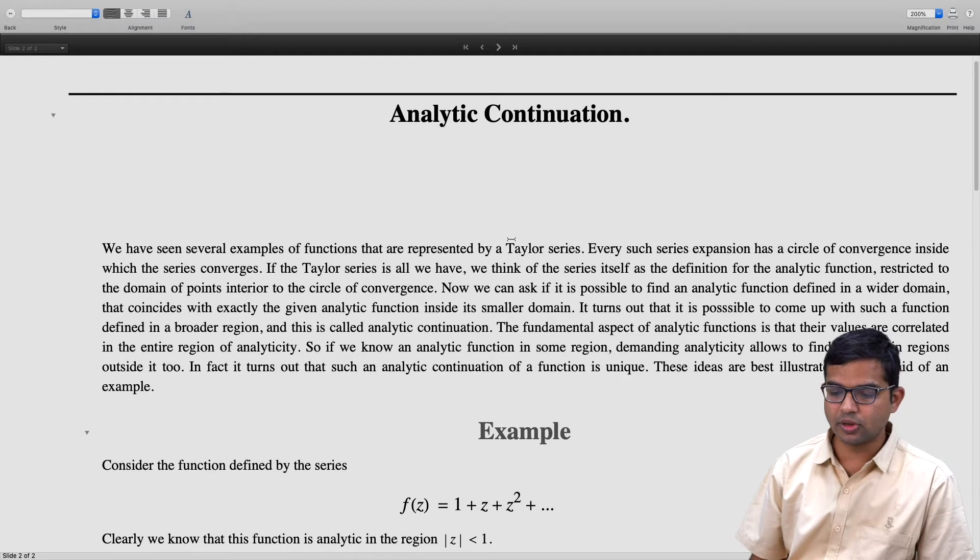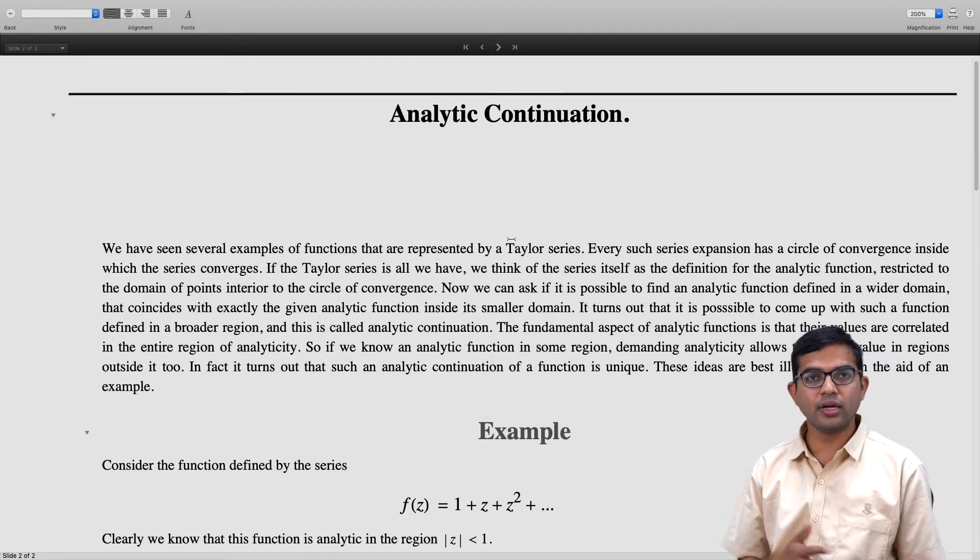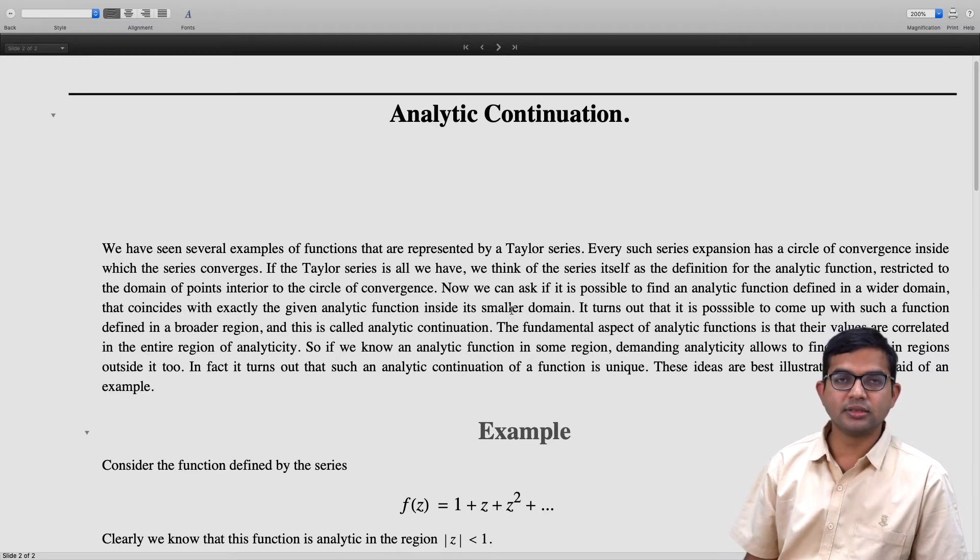Consider this series 1 + z + z² and so on, going all the way to infinity, and we know that this Taylor series is convergent when mod z is less than 1.